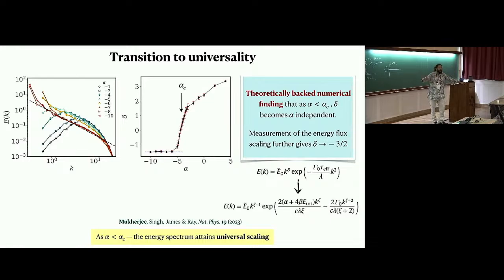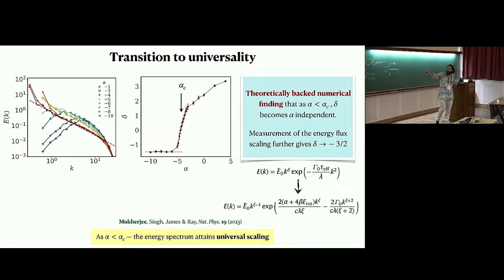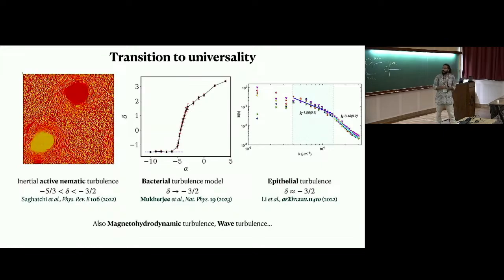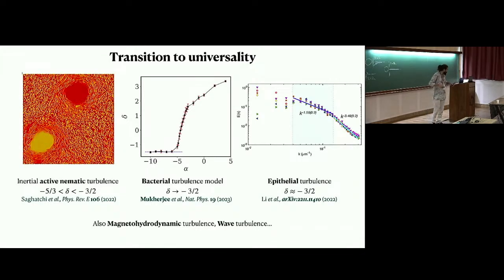The exponent zeta is positive when measured, and beyond a critical activity the flux becomes independent of alpha, so zeta doesn't change with alpha. The -3/2 exponent turns out to be interesting: people looking at inertial turbulence and active nematics get an exponent very close to -3/2, as do epithelial turbulence, MHD turbulence, wave turbulence, and bacterial turbulence in this model. So there could be some larger universality between these kinds of flows, though we don't know much more about that yet.